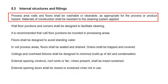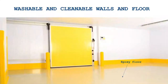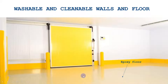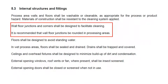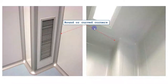Clause 5.3 is Internal Structures and Fittings. The first point is that process area walls and floors shall be washable or cleanable as appropriate for the process or product. Your floor should be washable — you can use epoxy flooring because it is easily washable and resistant to cleaning chemicals. Wall-floor junctions and corners shall be designed to facilitate cleaning; you can use round corners so they can be drained easily.